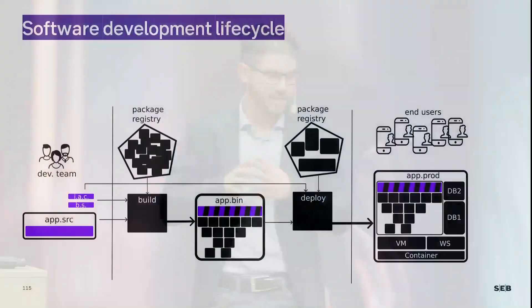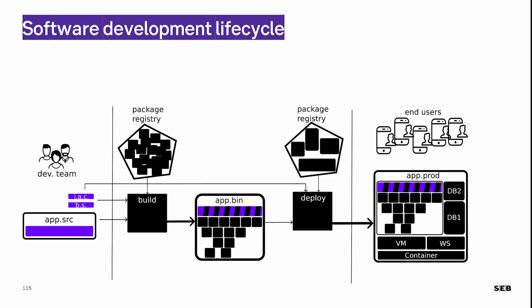I'd like to start talking about the software development life cycle — this is where everything begins. It starts with a team of developers, commonly assisted today by bots, who write source code understandable by humans. After the code is written, it goes into a build pipeline. In black are the processes: the source code goes into the build, which compiles the code, then tests it, and bundles the whole application into an executable binary.